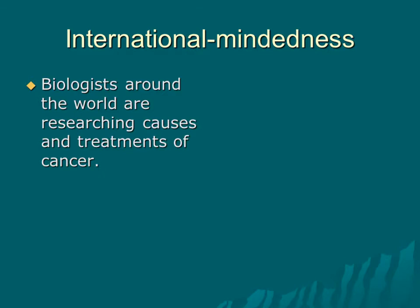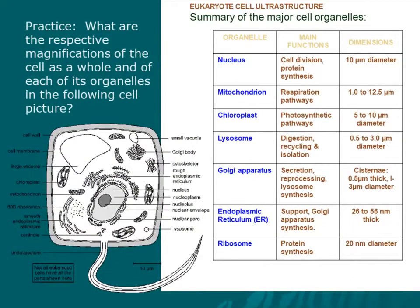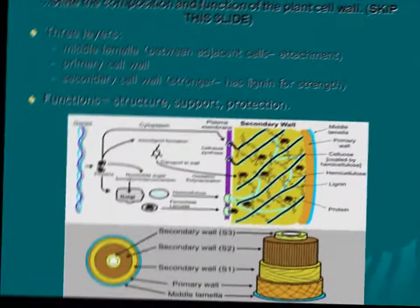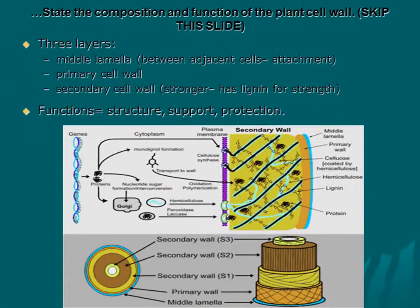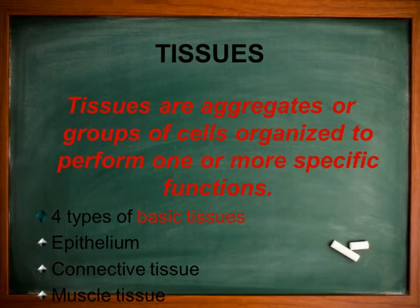Liver and its surroundings. Liver. Bile juice. Bile salts. Cholesterol. Bile pigments. Gallbladder — storage of bile.